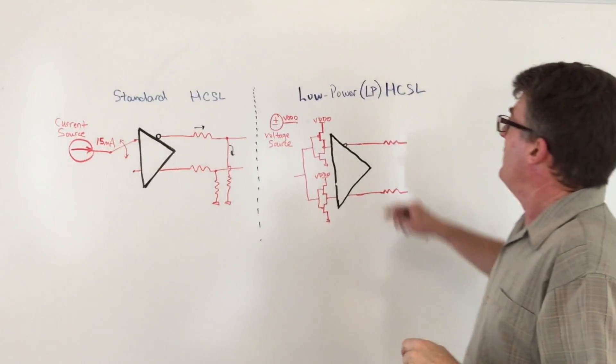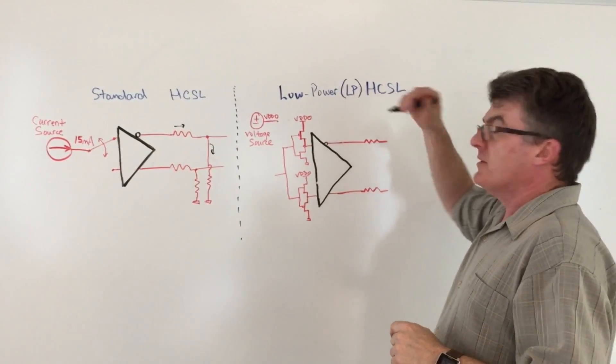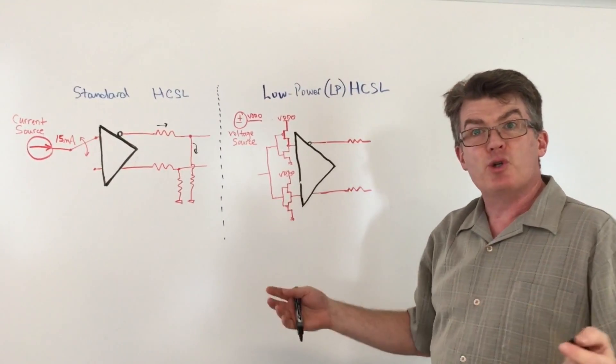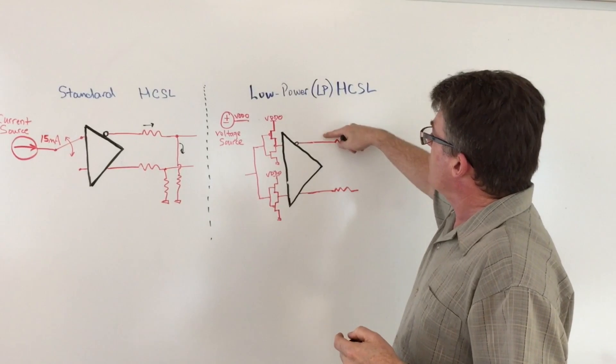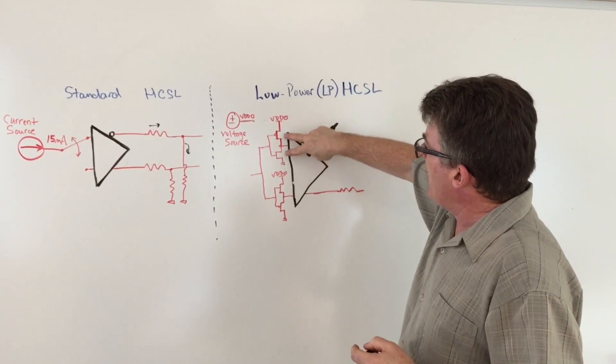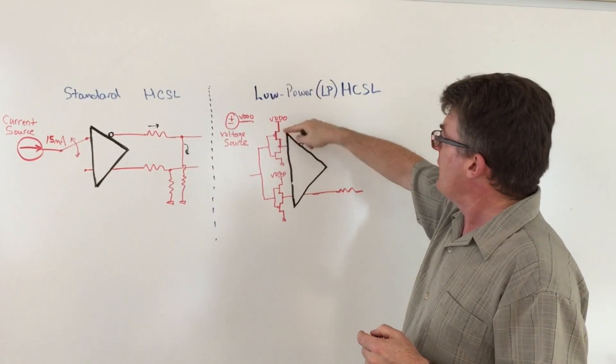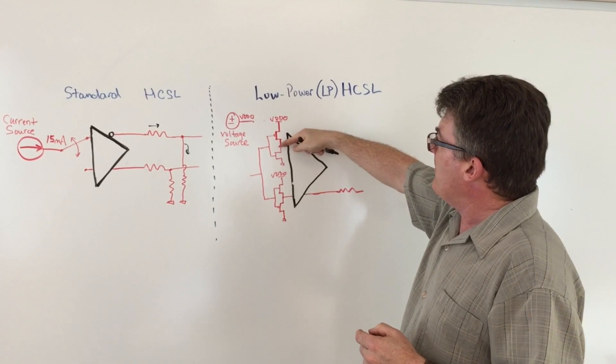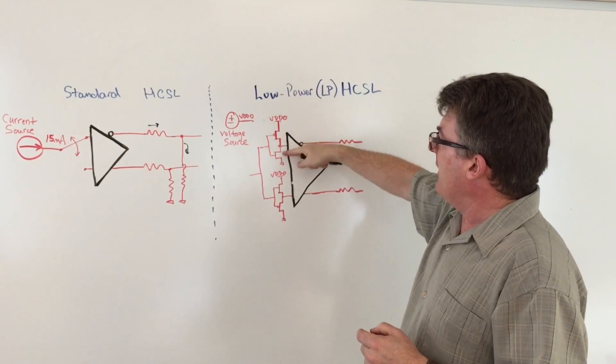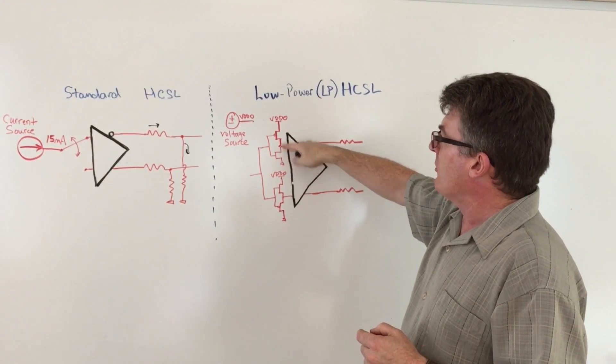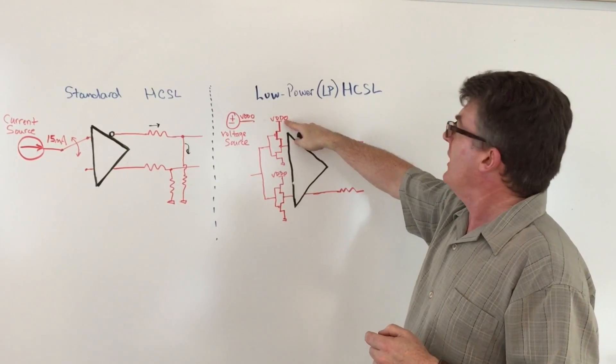The low power HCSL outputs are sometimes referred to as push-pull outputs because on the complement and true lines here, we actually have two transistors which are yanking the signal between ground and this thing called VDDO.